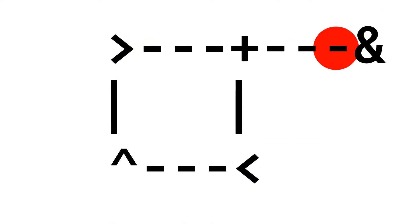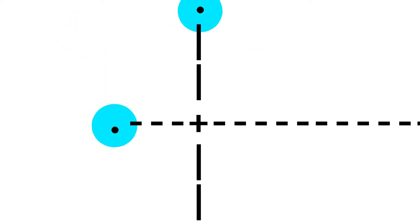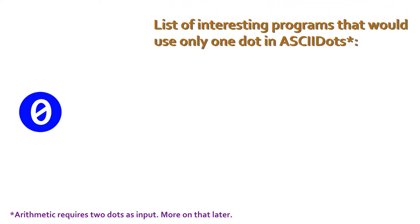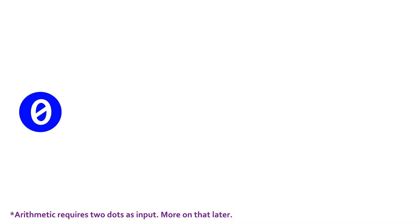When a dot reaches an ampersand, the program will end and all the dots will stop moving. Dots move at the same time, so if you have code that contains two dots, both of them will move simultaneously. Make sure to use a plus wherever the paths intersect. To delete a dot, make it fall off the edge of the path. Dots act as both instruction pointers and as variables, so if you want a program to do anything interesting, it is required that you use more than one dot. For now we'll only be using one dot.